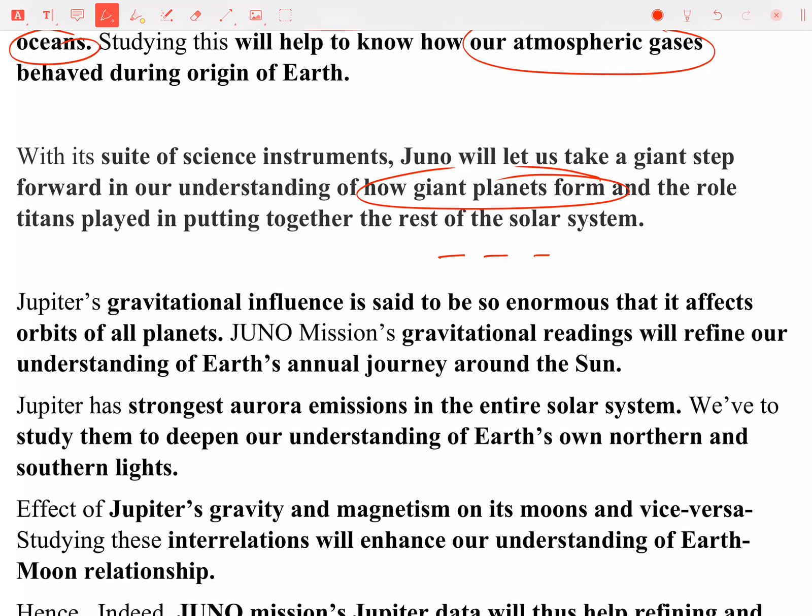How did giant planets form? There are actually three very different points to consider: first, how the solar system was formed; second, how the terrestrial and Jovian planets were formed; and third, how the giant planets specifically were formed. These three are very different points, so if you try to quote them all as one point, that is absolutely not right. You have to focus on these distinct things.